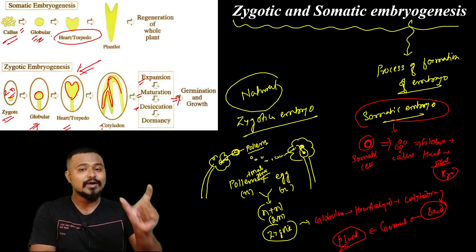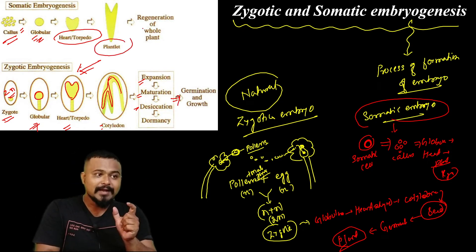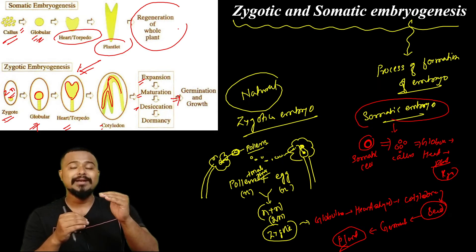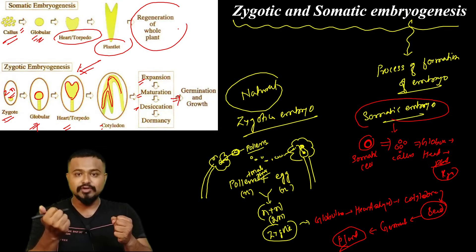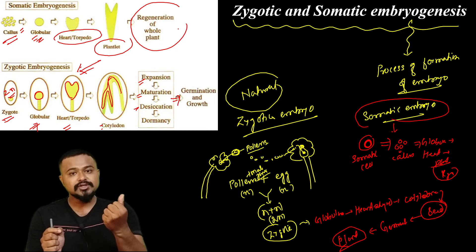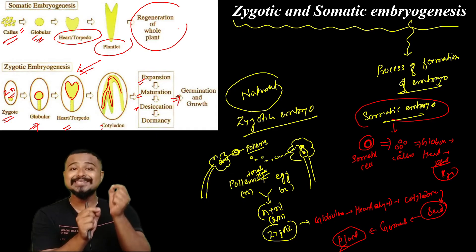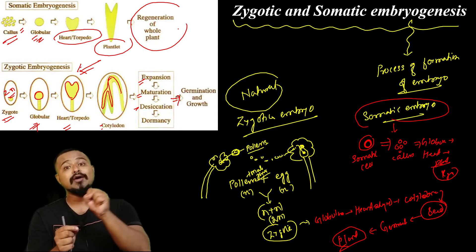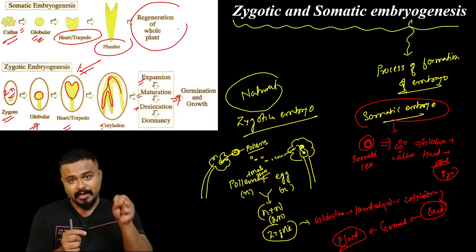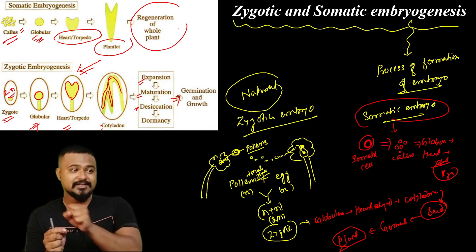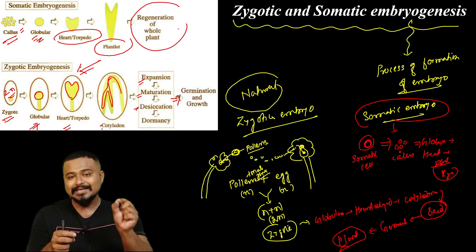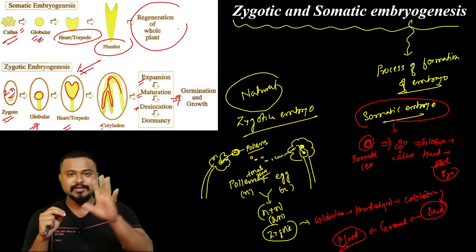Somatic embryogenesis is mainly a tissue culture technique. The plantlet develops and is regenerated. In somatic embryogenesis, under normal in-vitro conditions, male and female gametes are not fused. Instead, a somatic cell is taken, cultured, and an embryo is developed under tissue culture conditions. The cell goes through the globular stage, heart shape, and finally plantlet regeneration. It is called somatic embryogenesis because a somatic cell develops into an embryo.